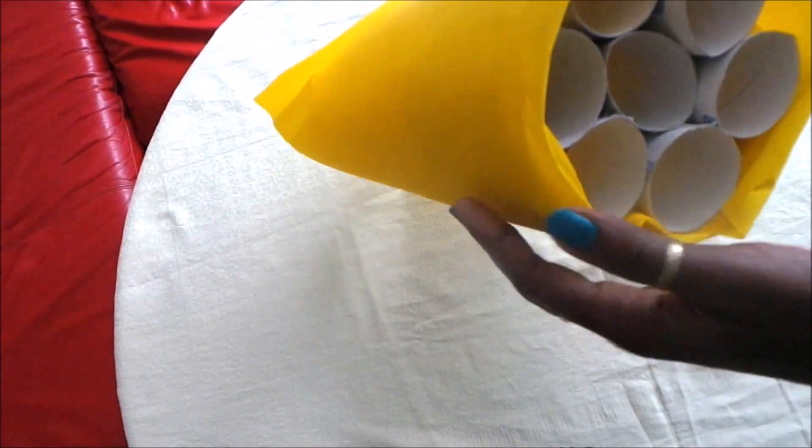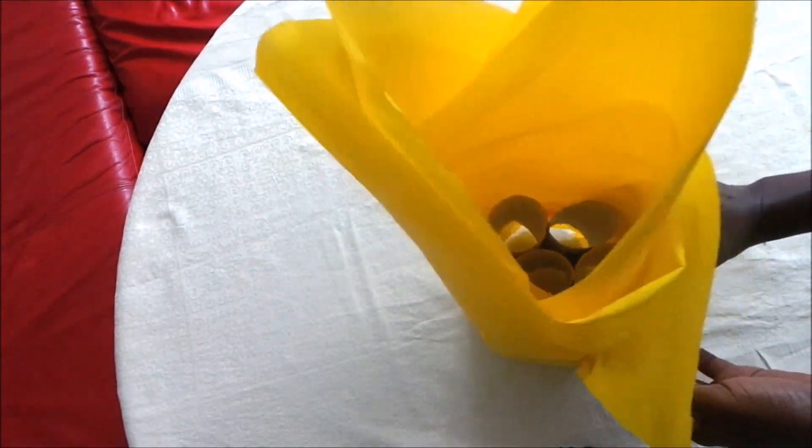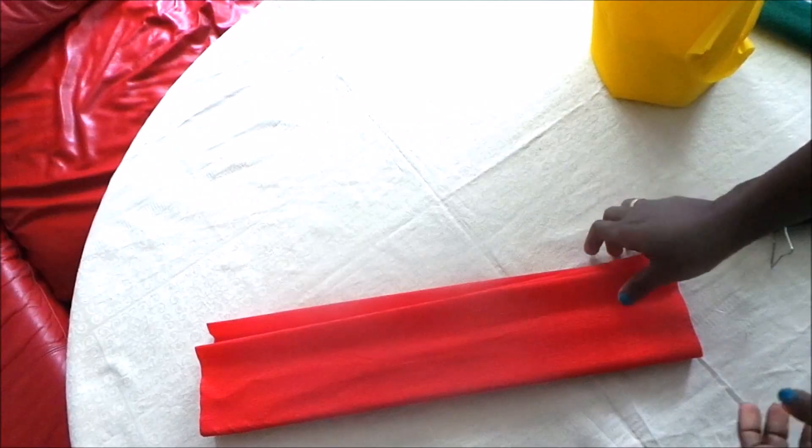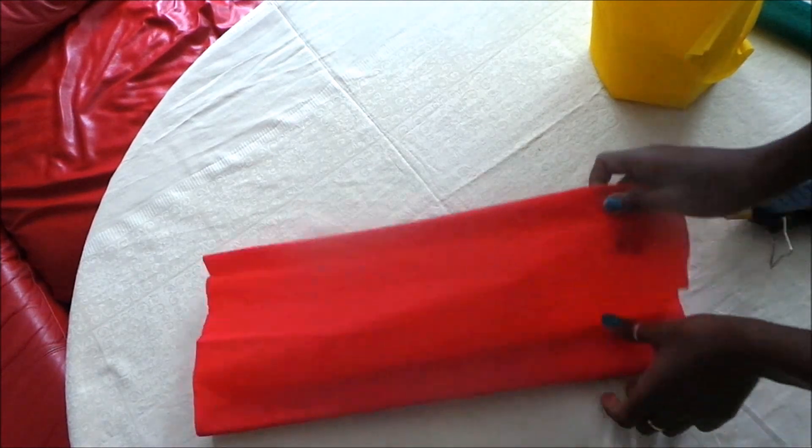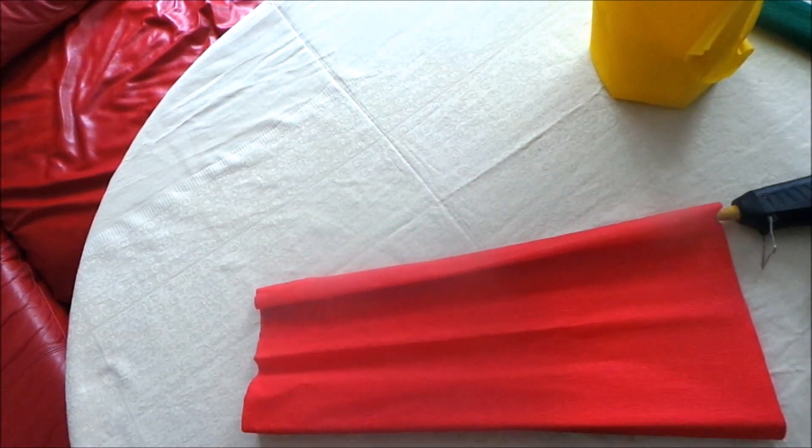After that, it looks like this on the bottom and up here. Then bring the red one and keep cutting seven pieces.